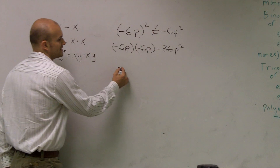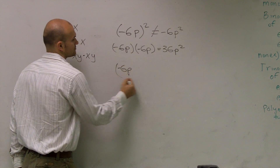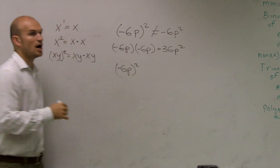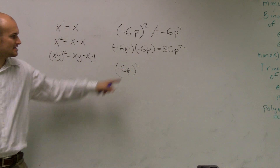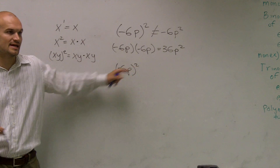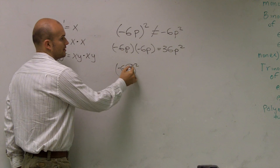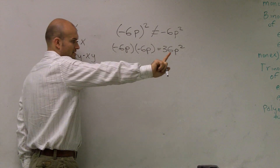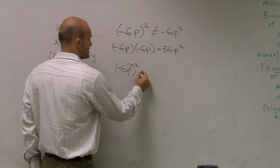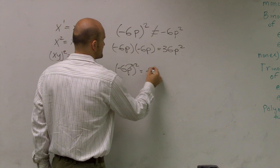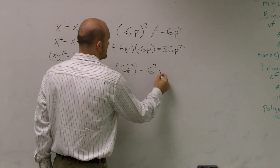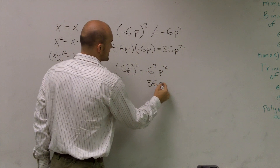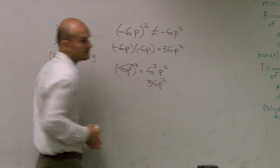The other way you can look at this is to remember that the square distributes to both of your terms. So this becomes negative 6 squared times p squared, which is a positive 36 p squared.